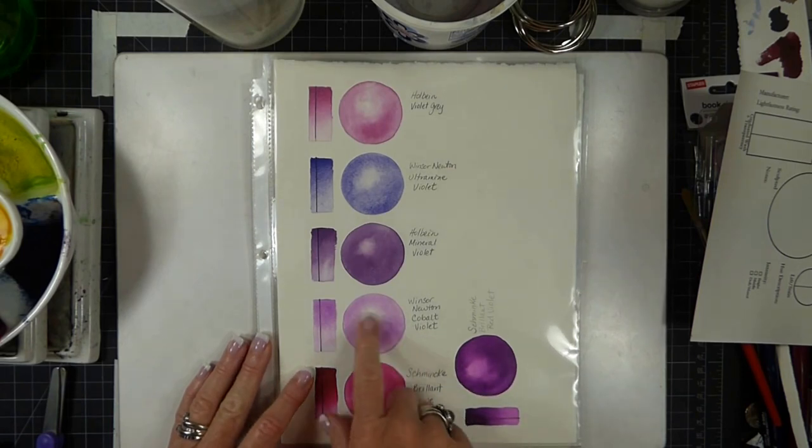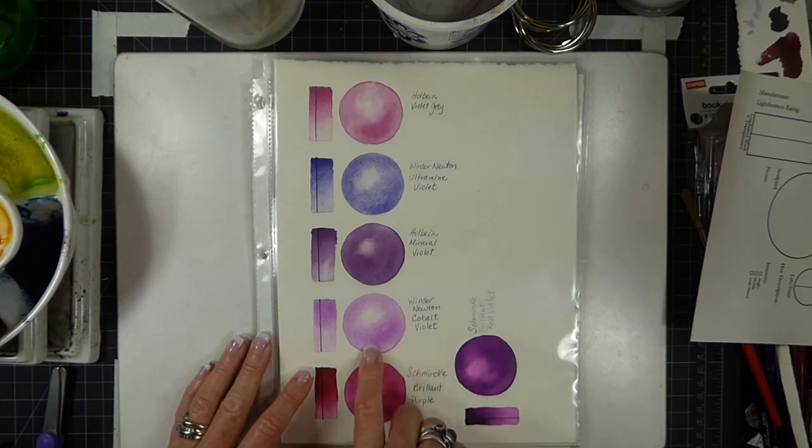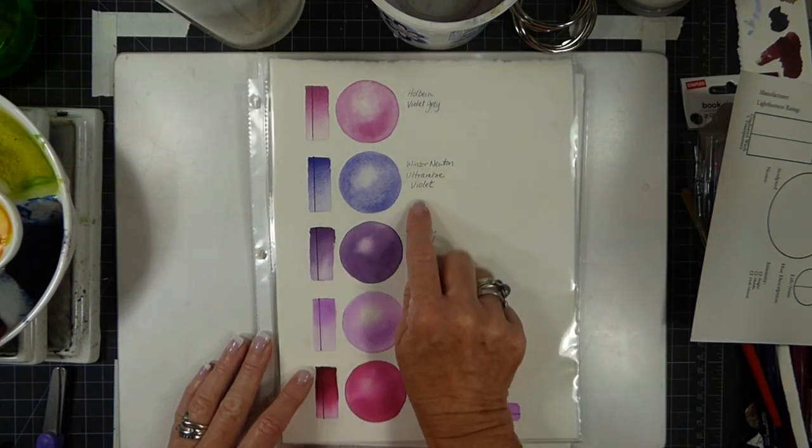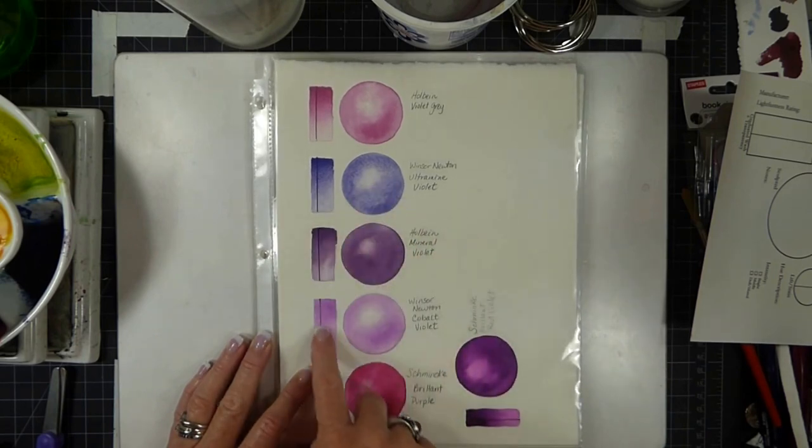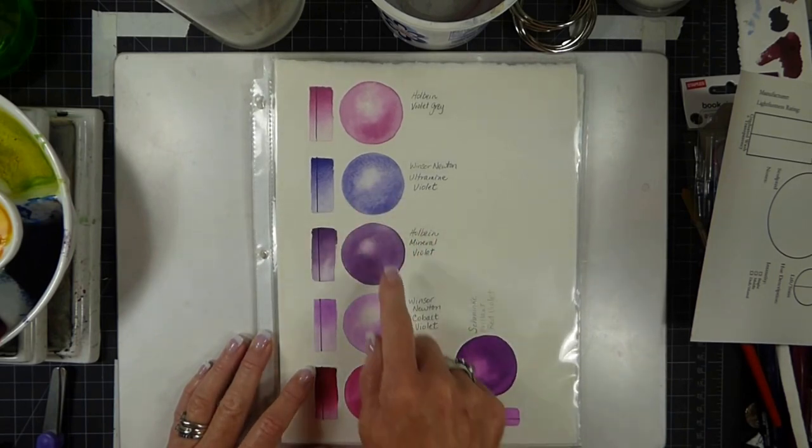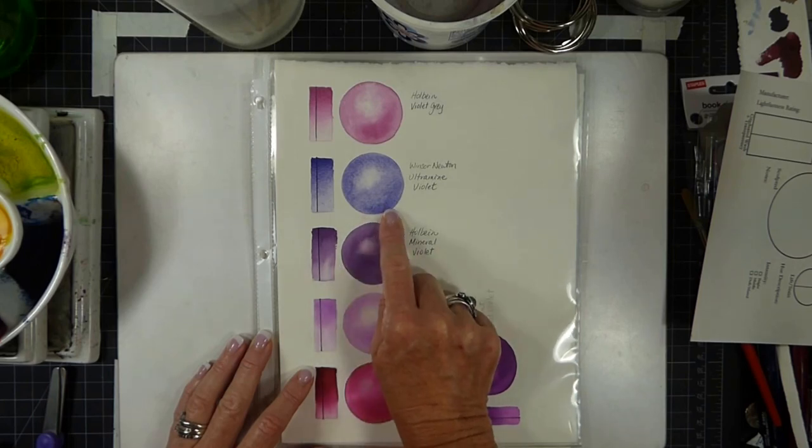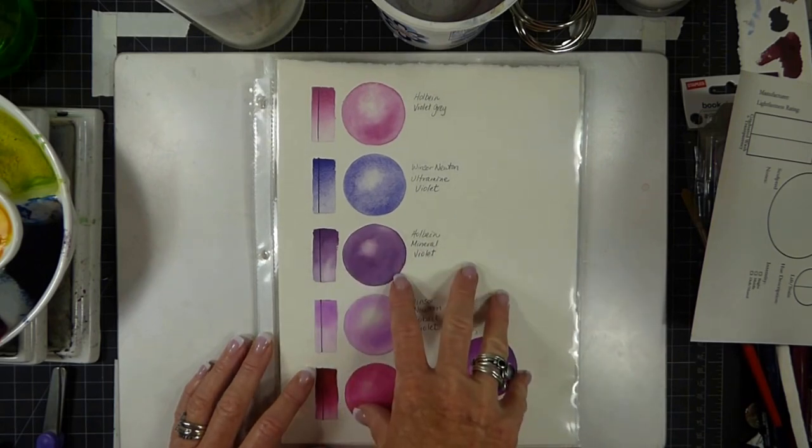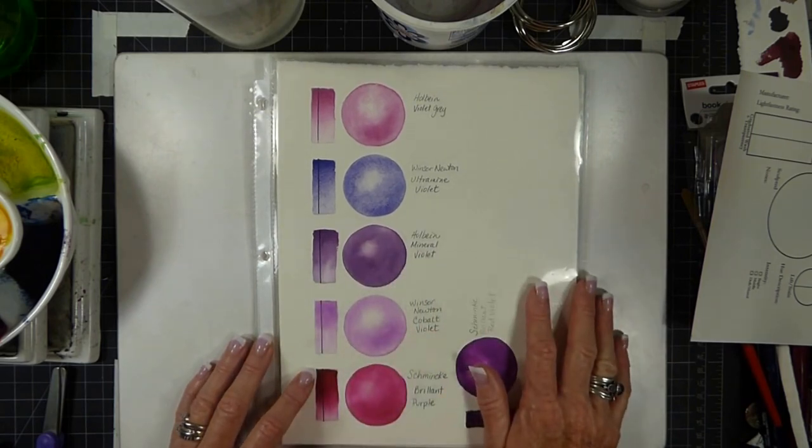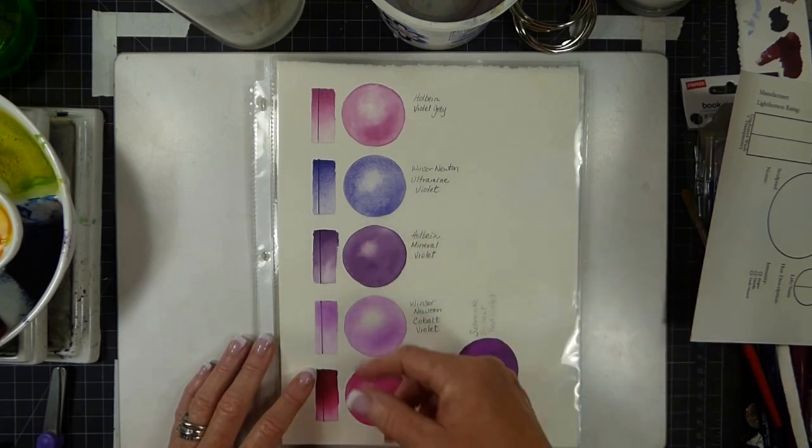For instance, I really love this Windsor Newton Cobalt Violet and the ultramarine color, but in looking at these particular swatches that I've done, the pigment is very heavily granulated and I may not remember that. Going back and checking through your reference at a later period of time is a really good thing to do.